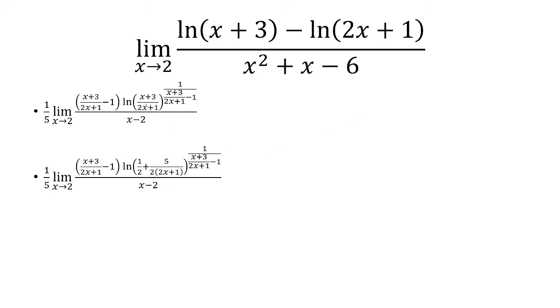Now I can break up x plus 3 over 2x plus 1 as 1 half plus 5 over 2 times the quantity 2x plus 1. And here I skipped the steps, but basically you would just use long division. You would put x plus 3 in, and then 2x plus 1 outside here, and just do long division to get this result.